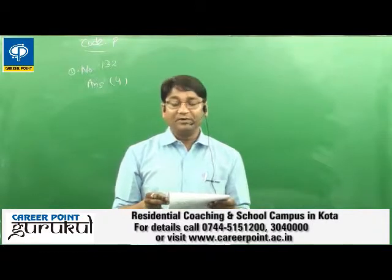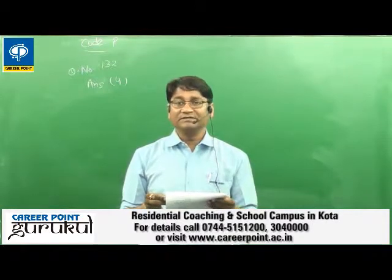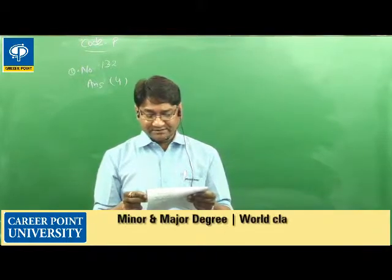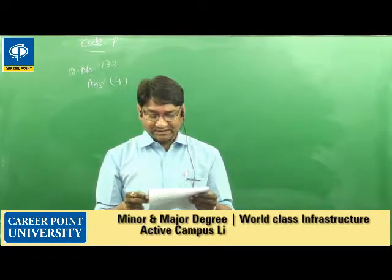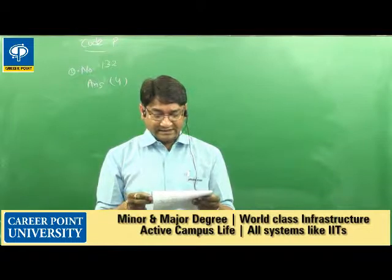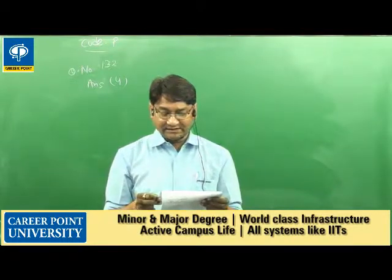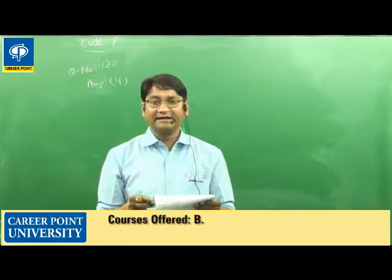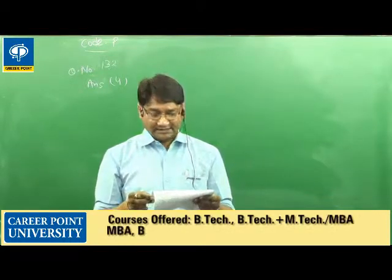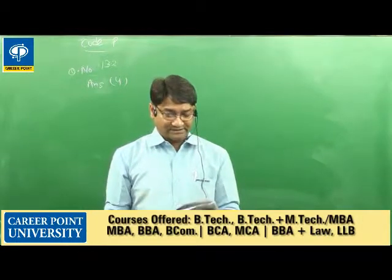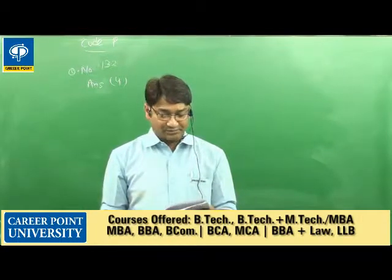For ecosystem services, pollination is one of the ecosystem services, so C matches with the fourth option, pollination. And D, population growth, will match with the third option, natality. So the correct answer of this question is option four.